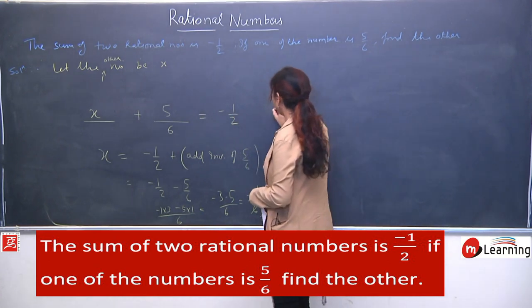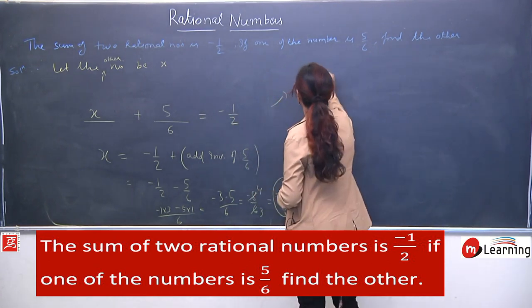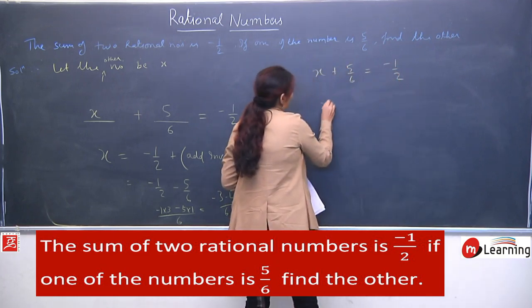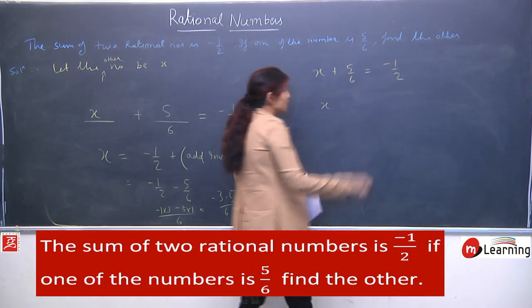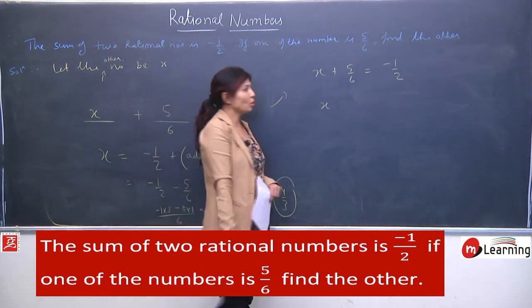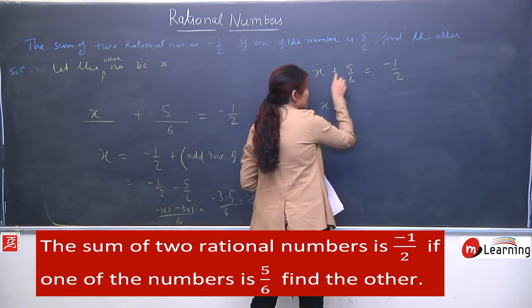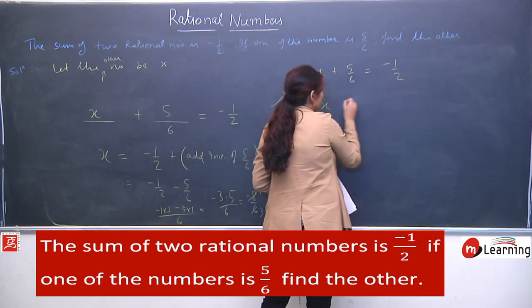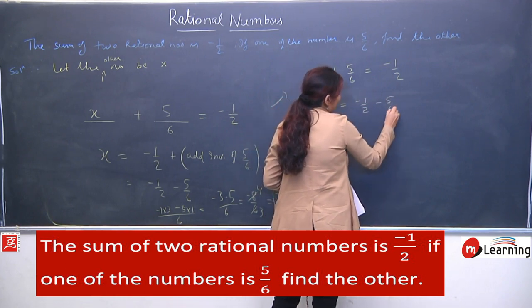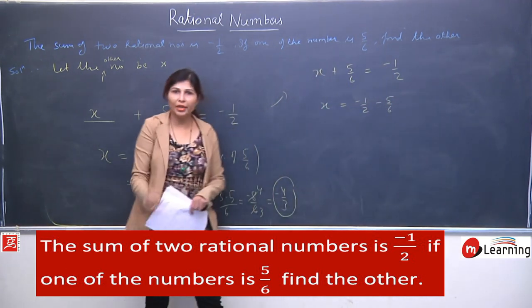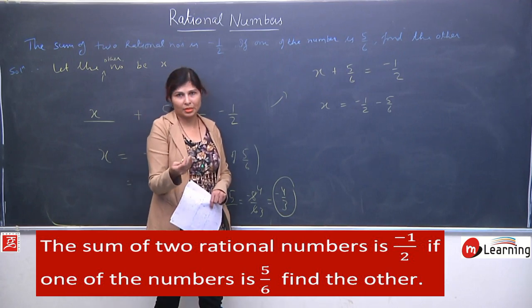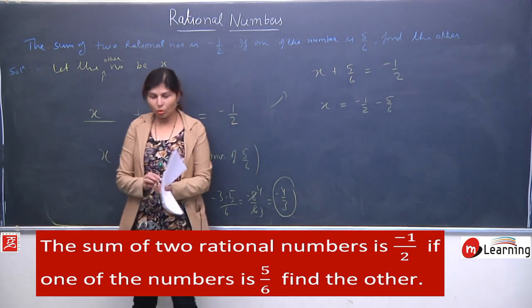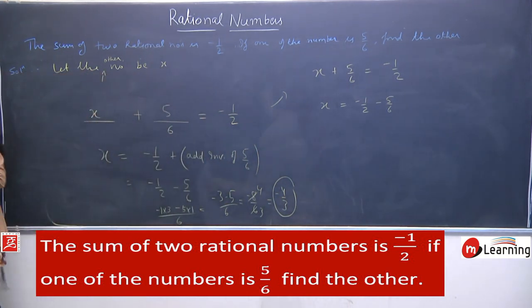If you do not want to write the additive inverse step explicitly, you can directly convert the sign when shifting to the right hand side — plus becomes minus. This is especially useful in objective type questions with time restrictions. You can directly write minus 1/2 minus 5/6 and solve with LCM. Both approaches are correct.